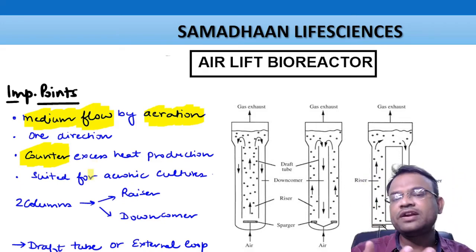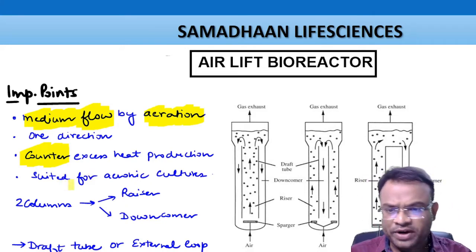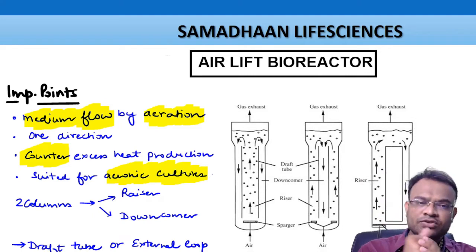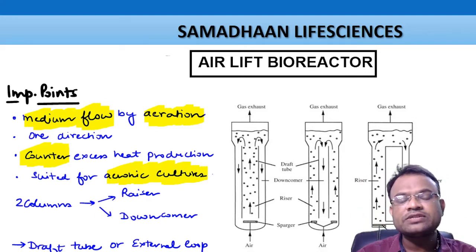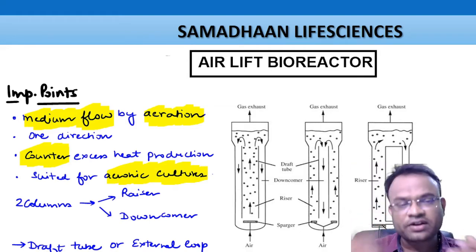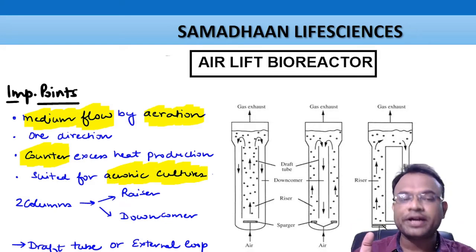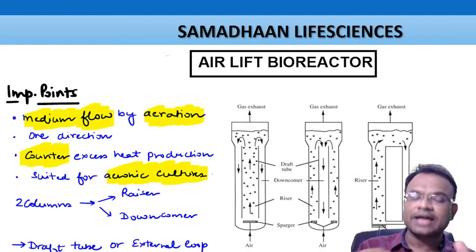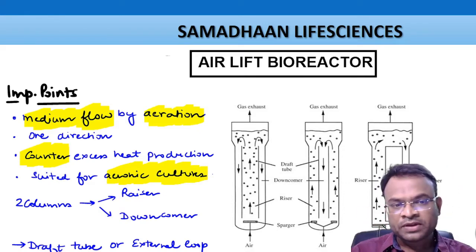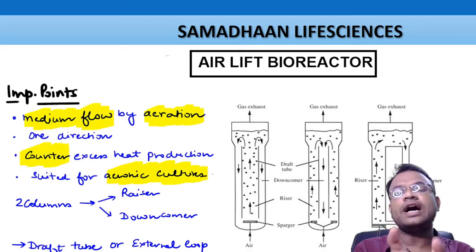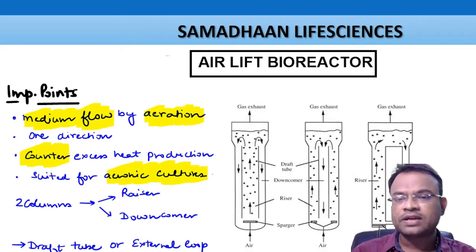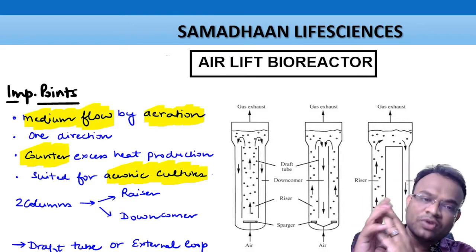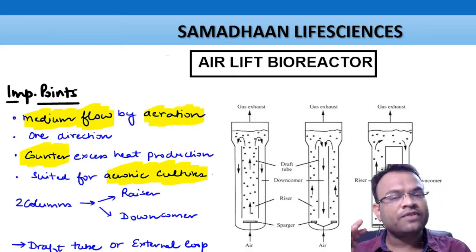Therefore, the airlift bioreactor is a mechanism to counter excess heat production. Since no impeller is present, there is no heat production. Another point: it is suited for aerobic cultures. In aerobic cultures, a lot of oxygen transfer is required. Since we are sparging oxygen in this mechanism, and through sparging we also achieve mixing, wherever aerobic cultures are grown, this would be the mechanism of choice.